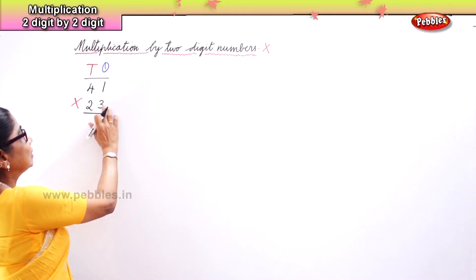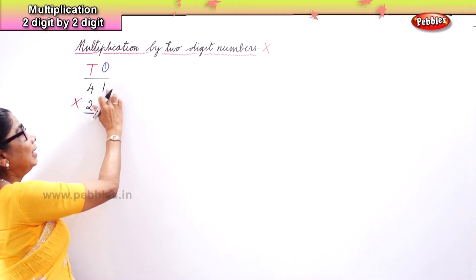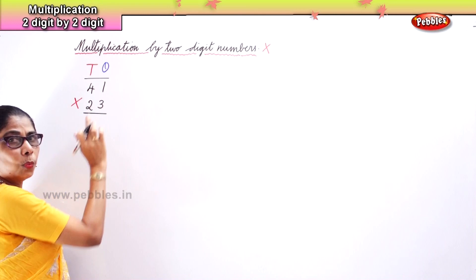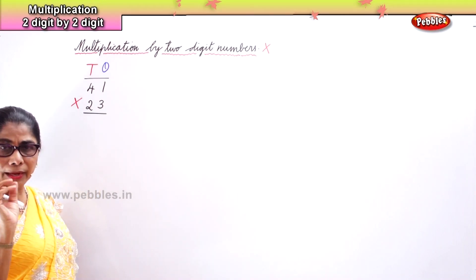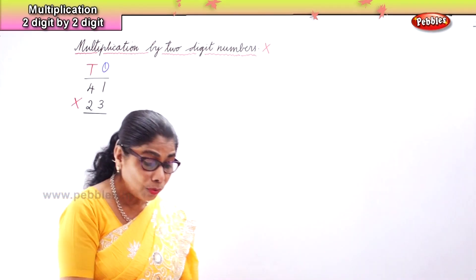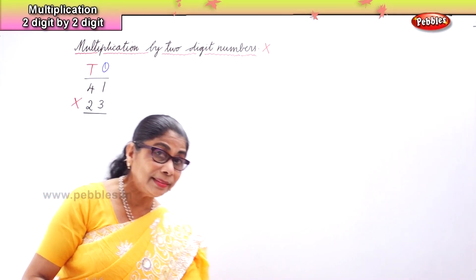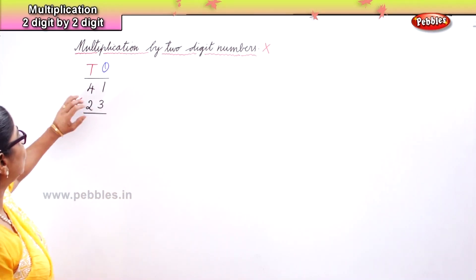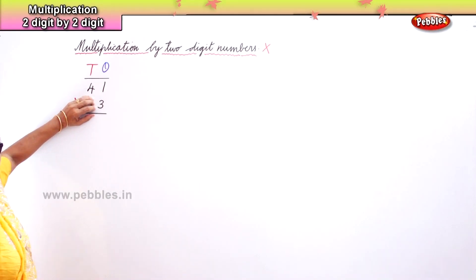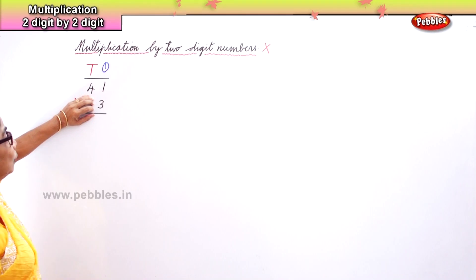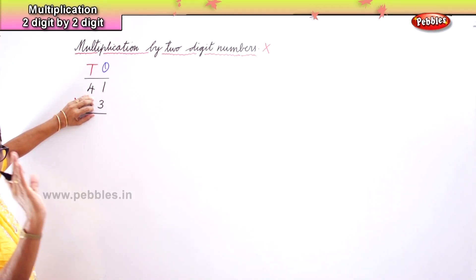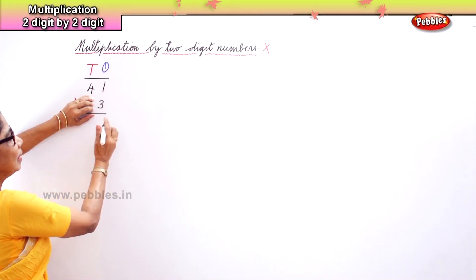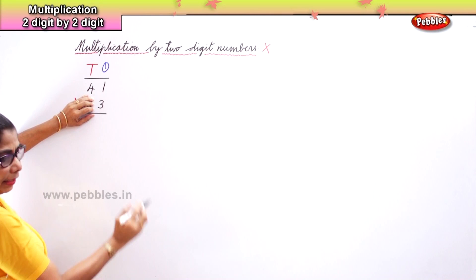First, take 3 and forget about the 2 in the tens place of 23. We are going to do 41 into 3. So three ones are three — we write 3 in the ones place.